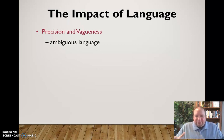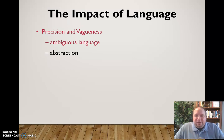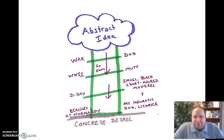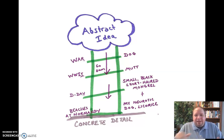Language also impacts things through precision and vagueness. We have what we call ambiguous language — intentionally vague and abstract. Abstraction exists on a spectrum: on one end, very abstract language that is unclear and imprecise; on the other, concrete language that is very specific and precise. This is illustrated by the ladder of abstraction. At the top are very abstract ideas like 'war' or 'dog,' which can mean many things. Further down the ladder, we get into concrete detail that brings everyone to the same page. Both can be appropriate depending on what you're trying to accomplish.